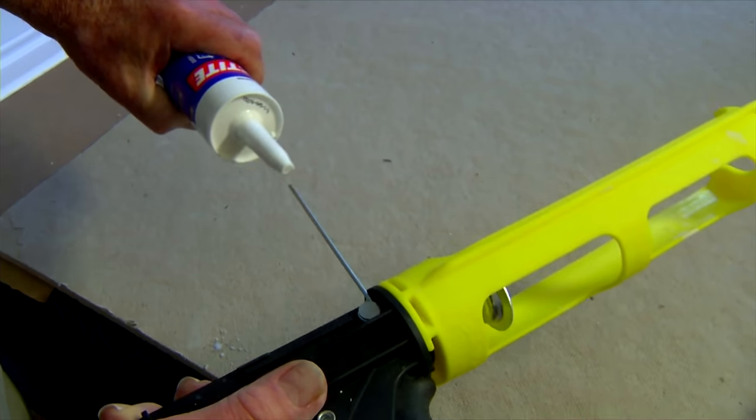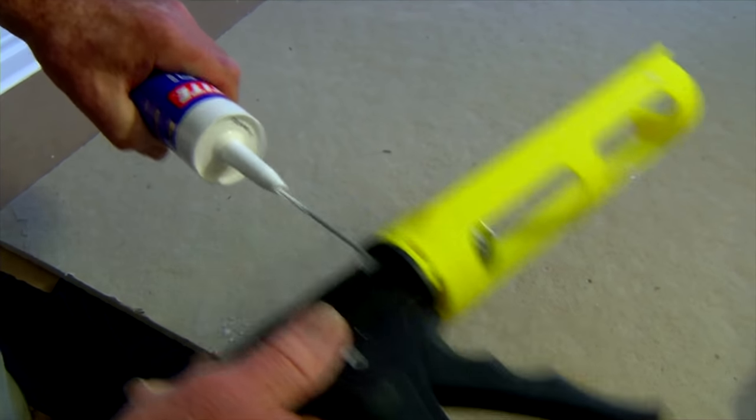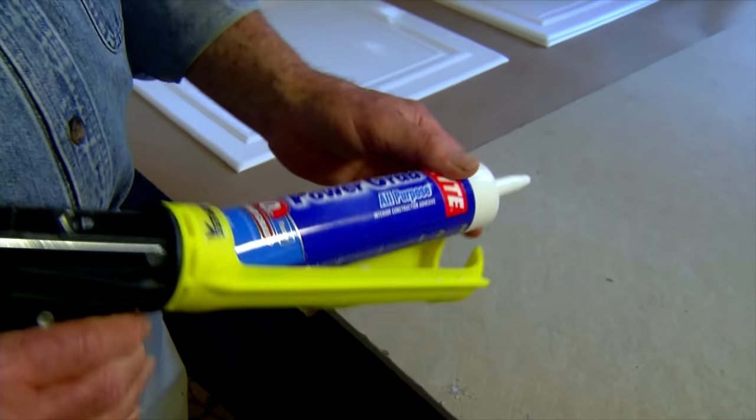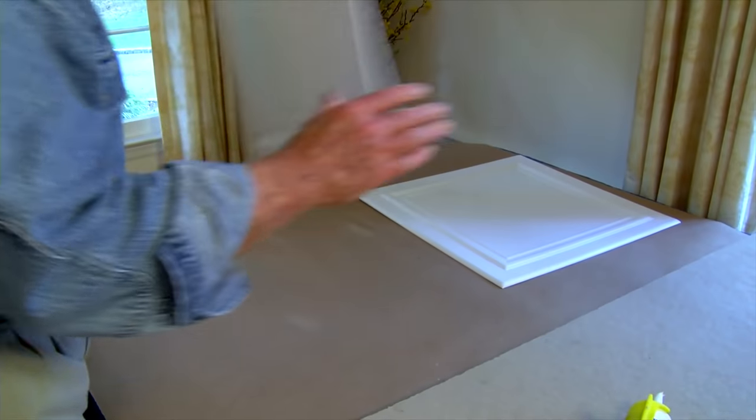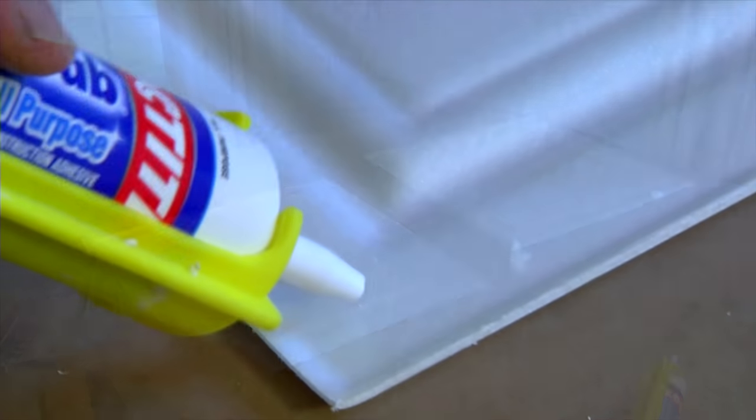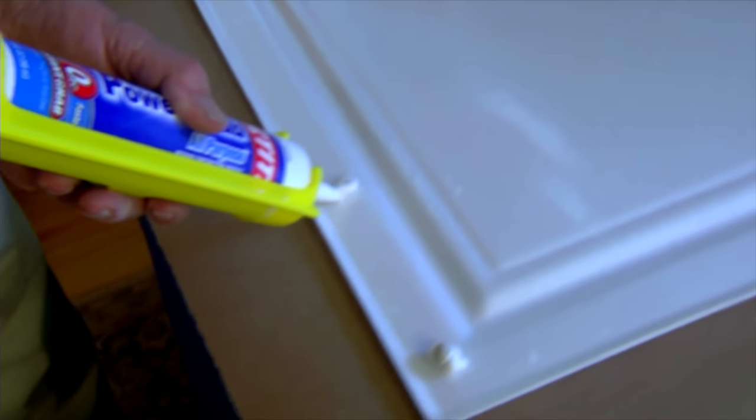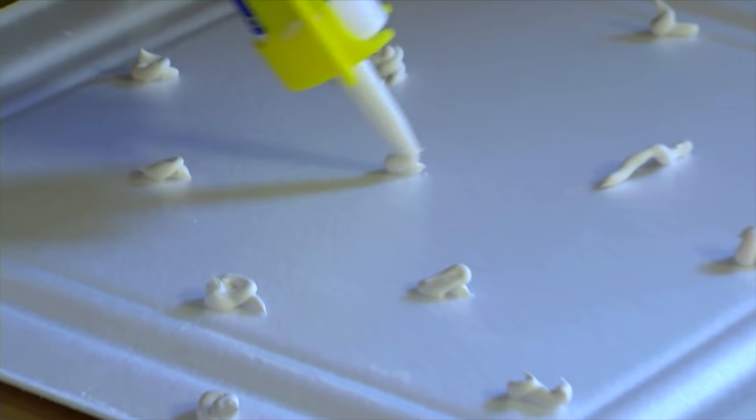Using the built-in piercing tool on the caulk gun, I puncture the seal at the base of the nozzle and then load the cartridge. The adhesive is best applied in dime-sized dabs spaced about six inches apart.